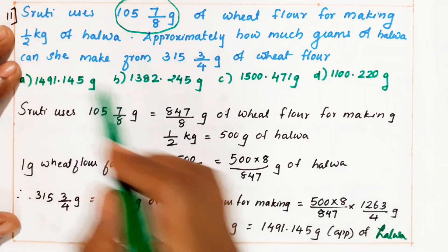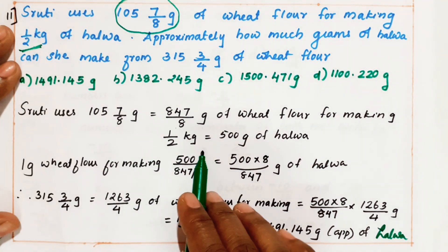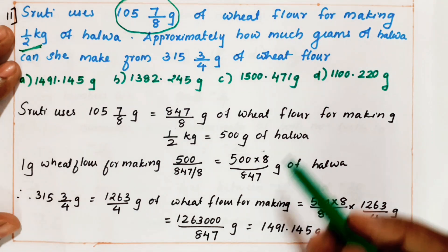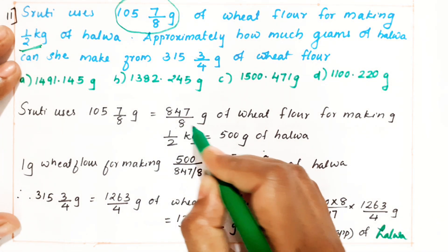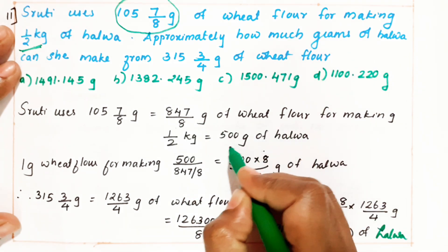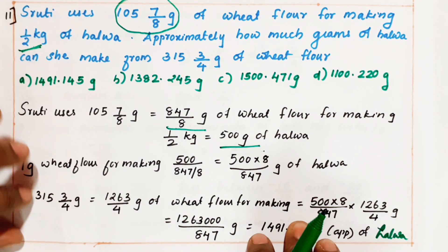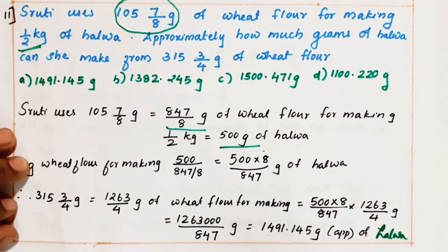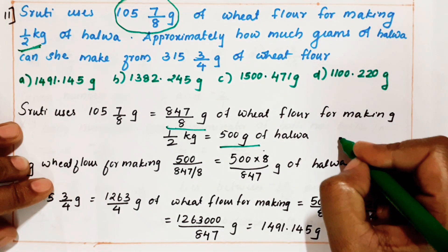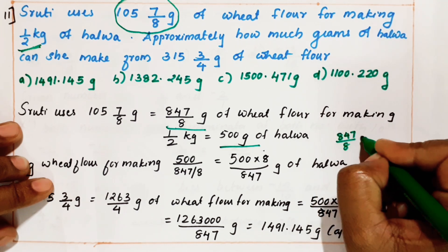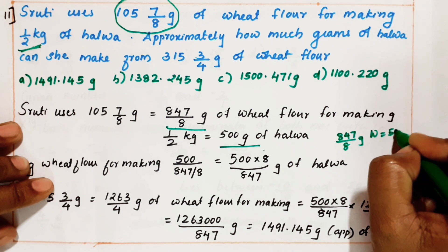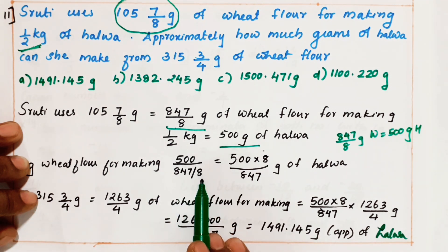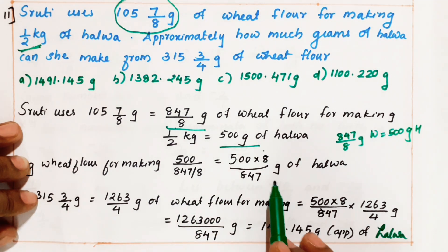That amount of wheat flour we need for making how much halwa? Half kg. Half kg is nothing but 500 grams, because 1 kg is 1000 grams. Therefore half kg is 500 grams of halwa. So 847/8 grams of wheat flour makes 500 grams of halwa. Now using the unitary method: 1 gram of wheat flour makes 500 divided by 847/8, that is 500 into 8 by 847 grams of halwa.